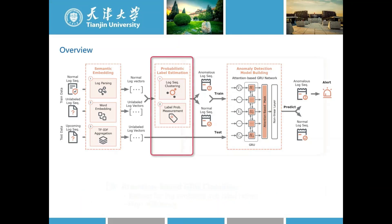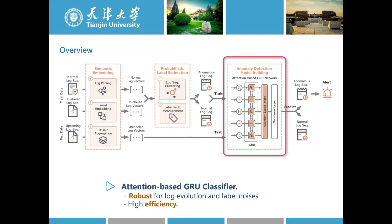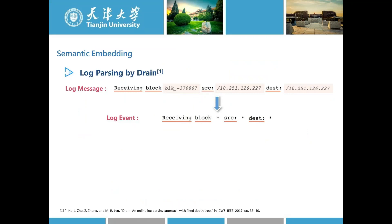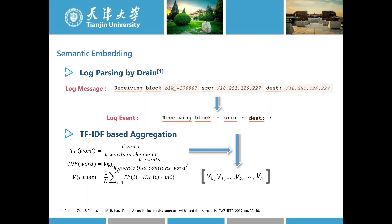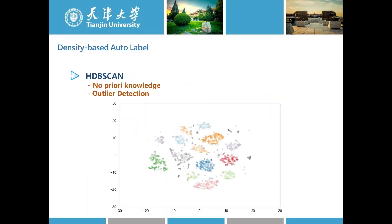Finally, we use auto labeled data to train a robust and efficient classifier for anomaly detection. Now I will go deeper into the details of each of those three steps. At the beginning, we follow a widely used approach to transform raw log messages into continuous-valued vectors. First, we use Drain to normalize the log messages, which keeps the major part of the log message but removes parameters such as IP addresses. After that, we use an open-source language model and TF-IDF algorithm to encode the natural language information into vectors, and then use these vectors for auto labeling.